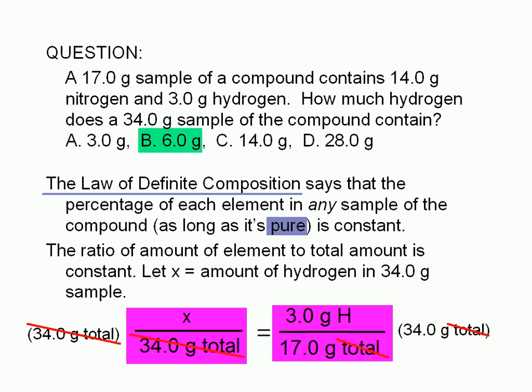Let's see if this answer makes sense. 34.0-grams is twice as much as 17.0-grams. Therefore, we expect to have twice as much of everything. So instead of 3.0-grams of hydrogen, we have 2 times 3, or 6.0-grams.